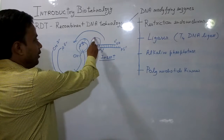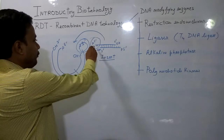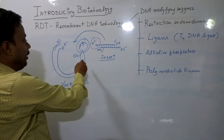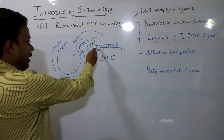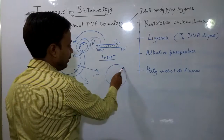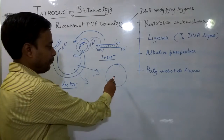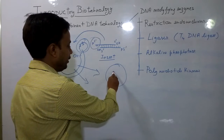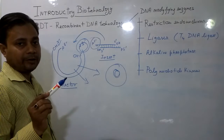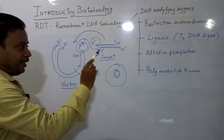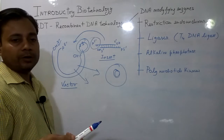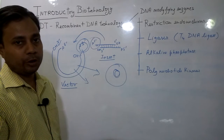The phosphate is available at the insert, which can integrate at the hydroxyl group of the vector. When this half-ligated molecule is introduced into a bacterial cell, the remaining ligation would be completed during replication inside the cell, forming a complete vector. So alkaline phosphatase is the enzyme used for the removal of phosphate from the vector molecule to prevent self-ligation.